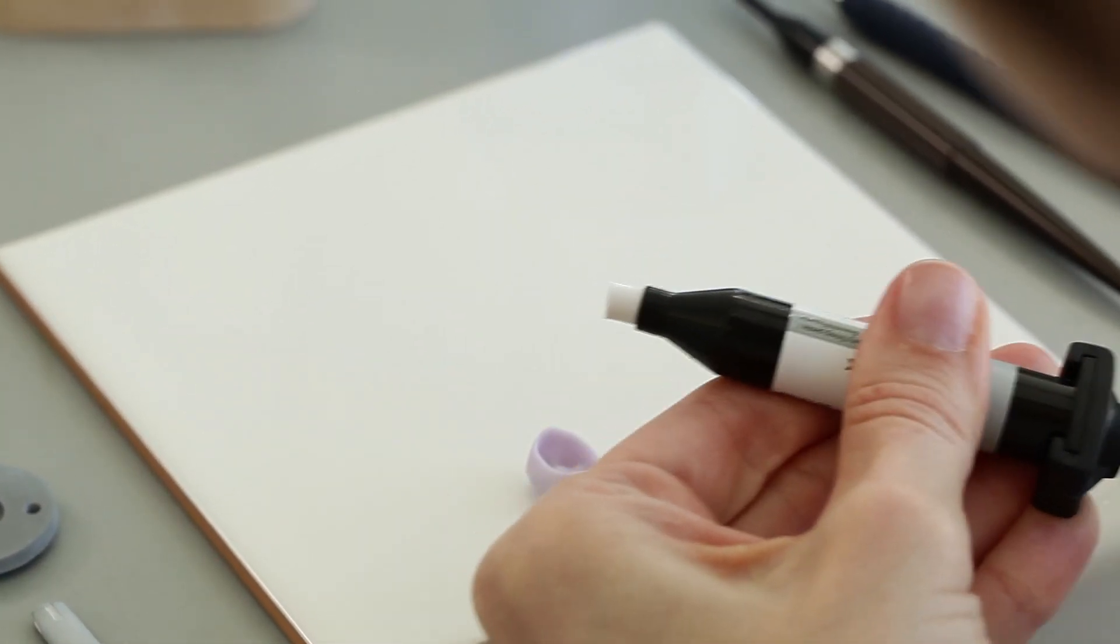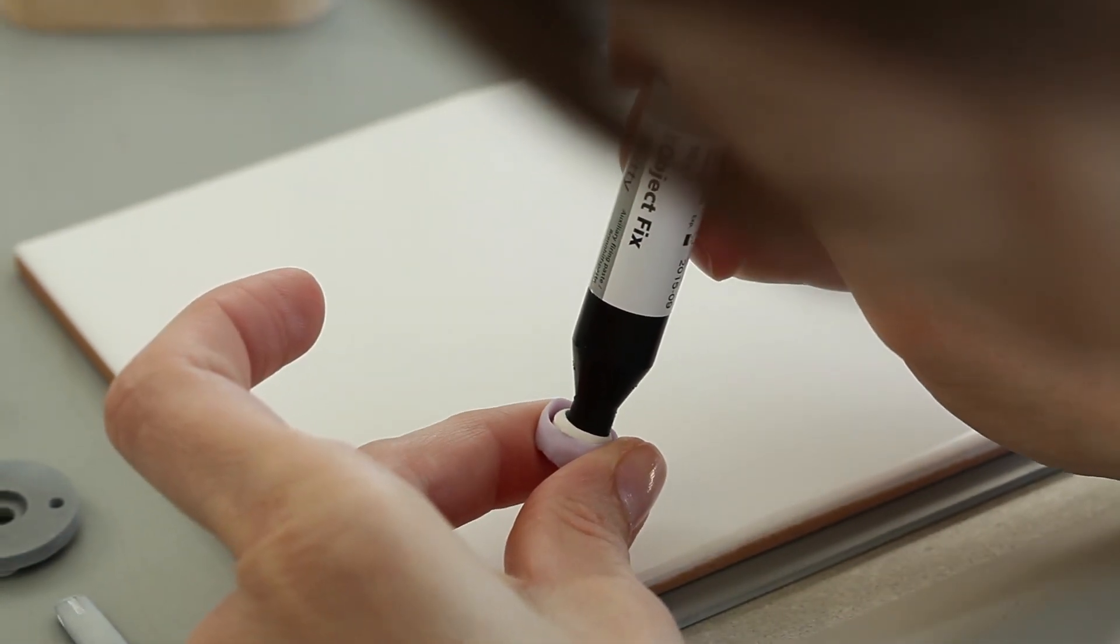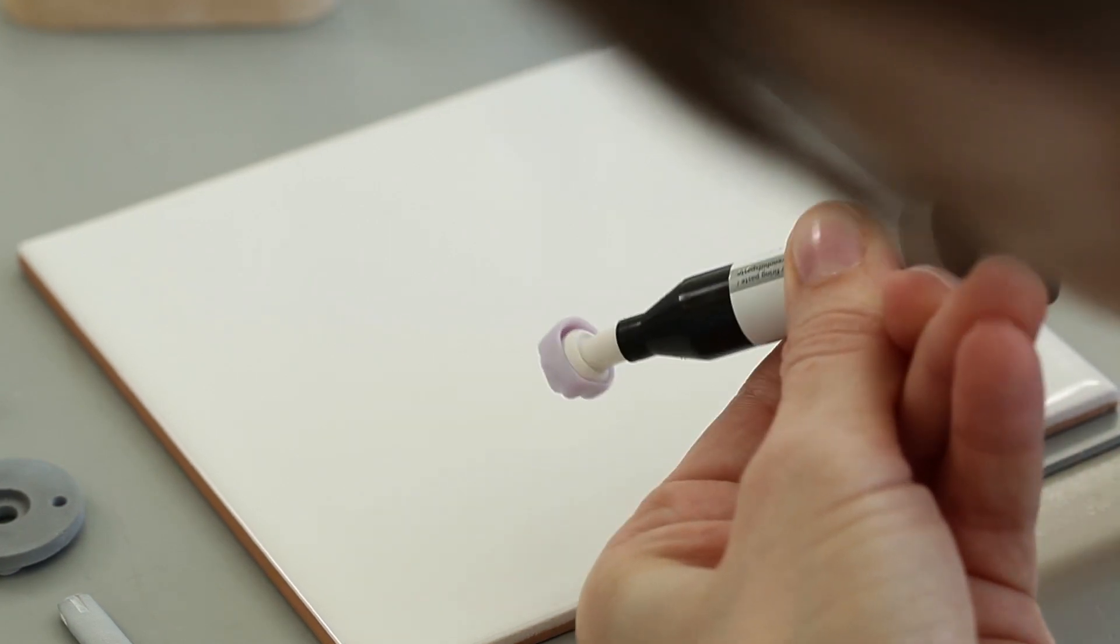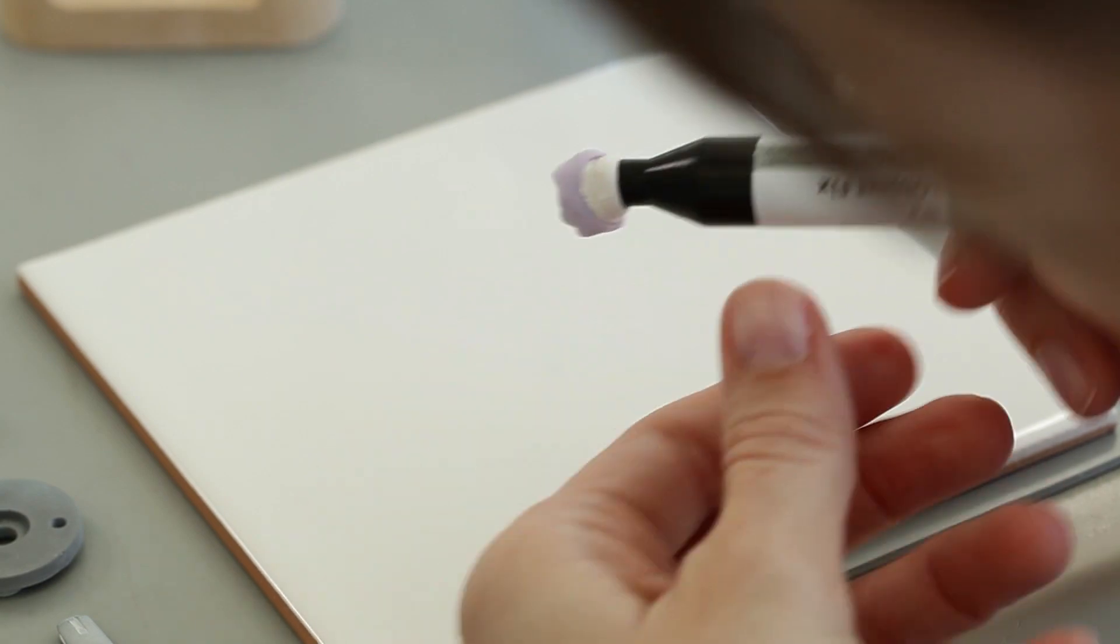Select the largest possible IPS Emax CAD crystallization pin. Fill the inside of the crown with IPS object fix putty or flow. Close the syringe immediately after use to prevent the material from drying out.